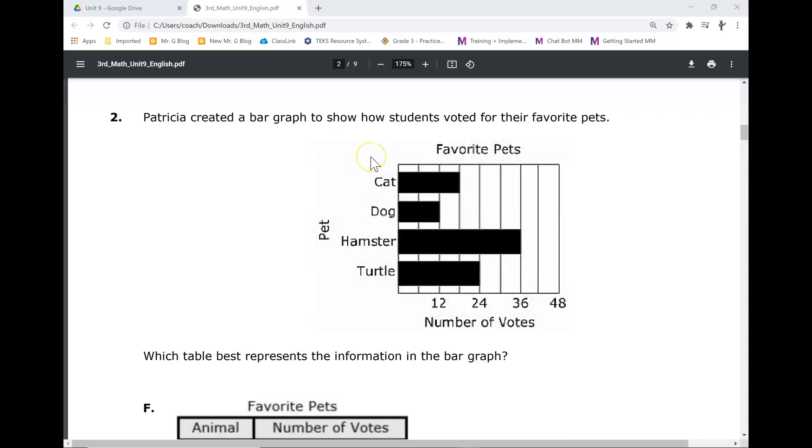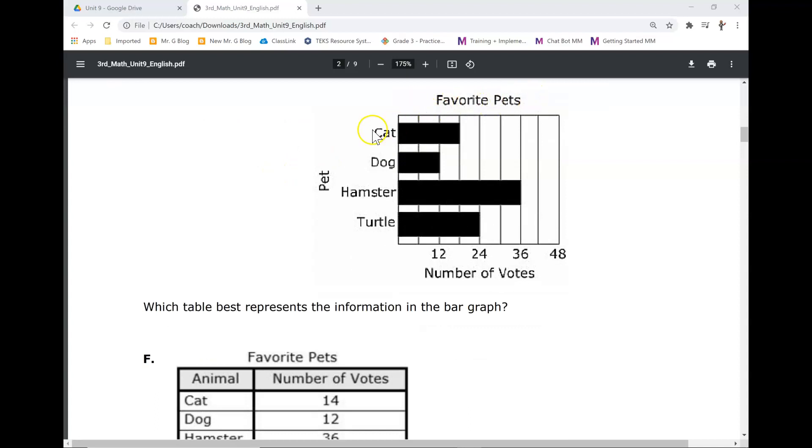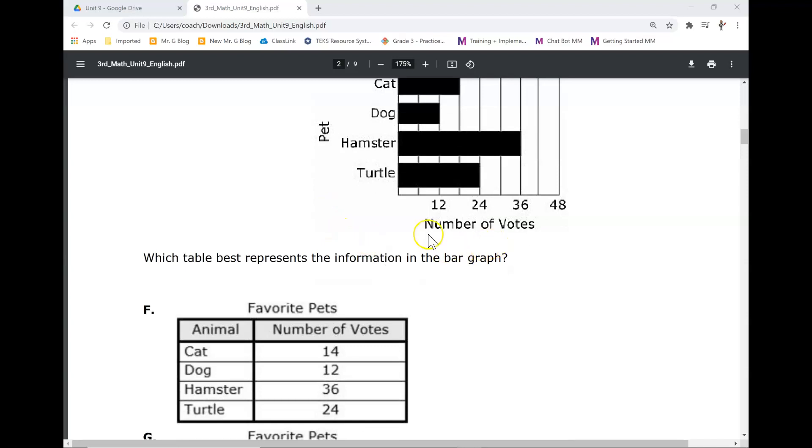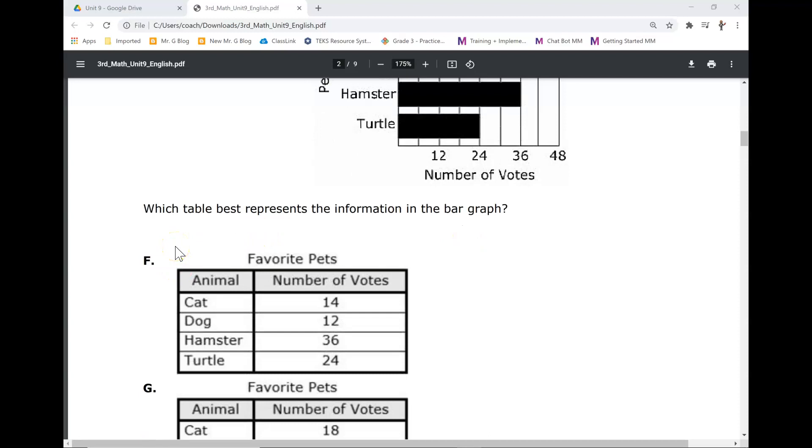Patricia created a bar graph to show how students voted for their favorite pets. Cat, dog, hamster, turtle. Number of votes. Which table best represents the information in the bar graph?